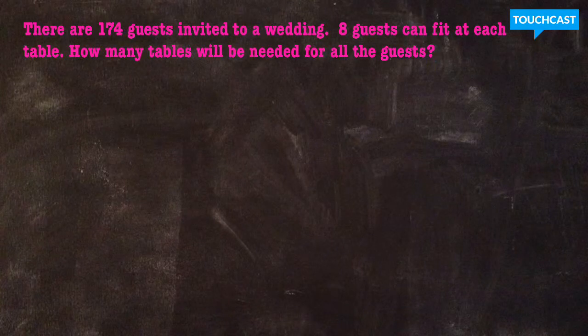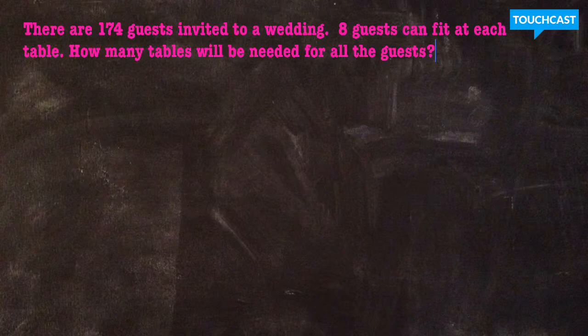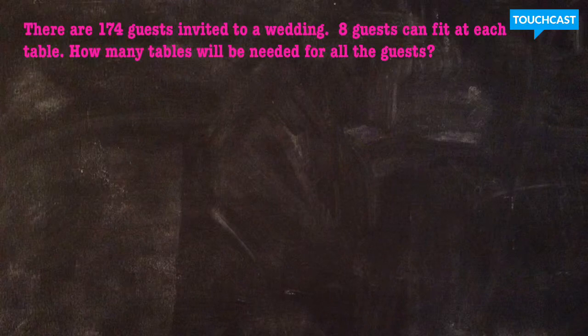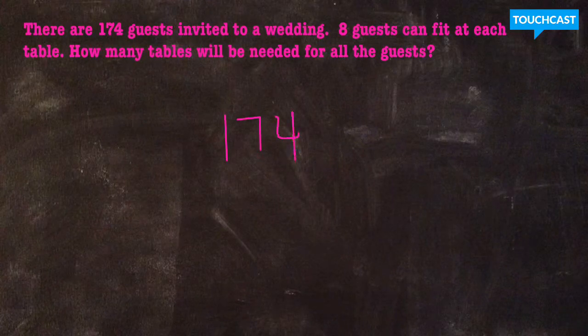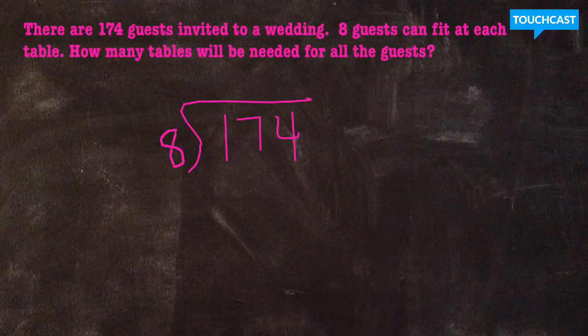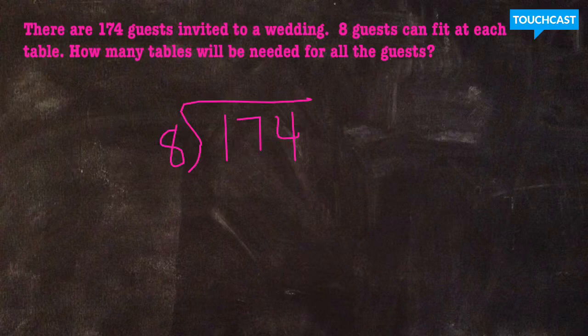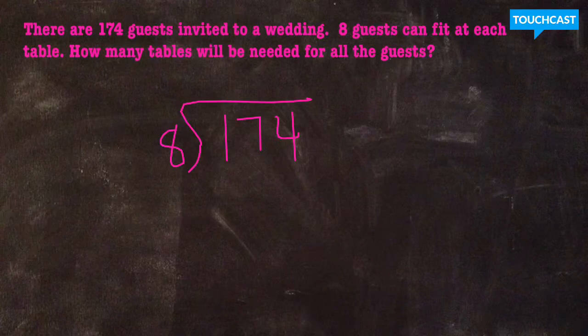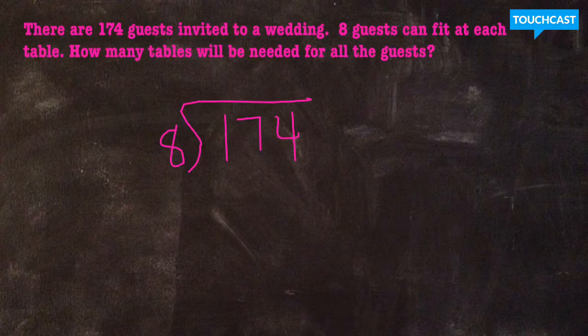So by process of elimination, you can probably understand that in this equation, you are going to end up rounding your answer because of your remainder. But let's check it out and see if we can understand why. So we have 174 guests being invited to a wedding. We can fit eight guests at every table. How many tables will be needed for all of the guests? Because think, you don't want to have anyone standing while trying to eat their dinner.